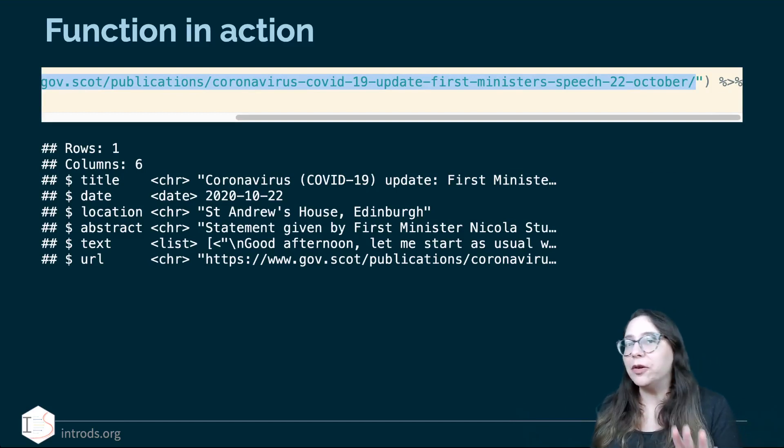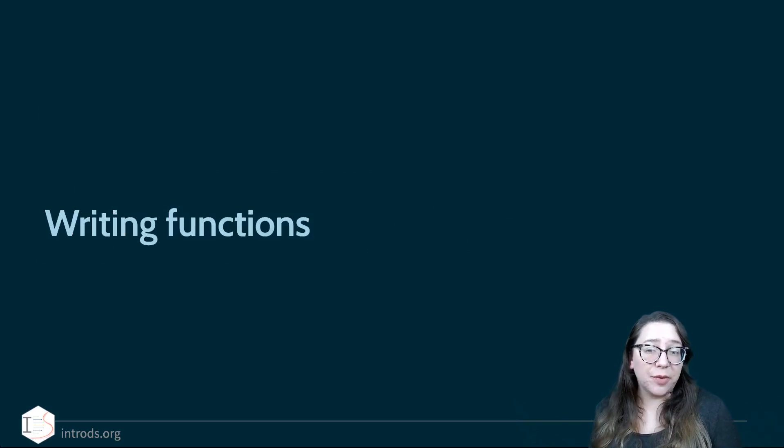Although we're again kind of veering into manual territory where we're doing something once per date. So let's say a few words about writing functions before we move on to saying how can we automate this so we're not the ones scrolling through and running the function 140 something times for each of the dates.